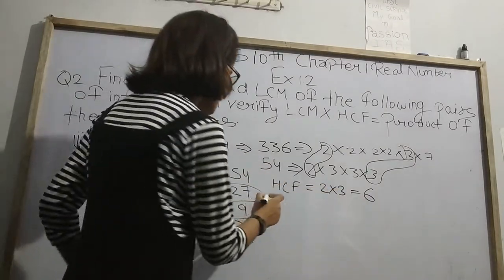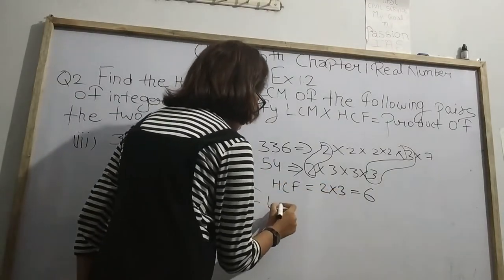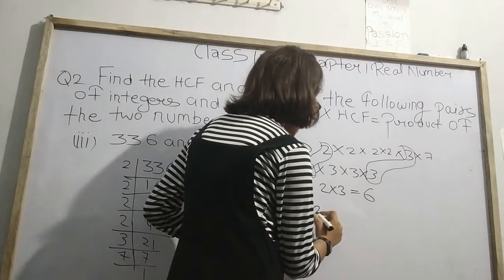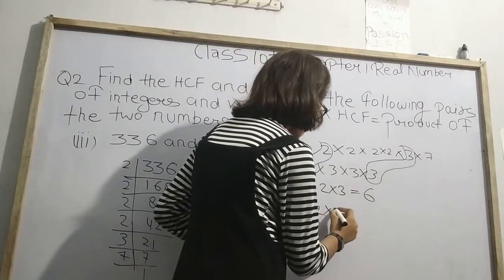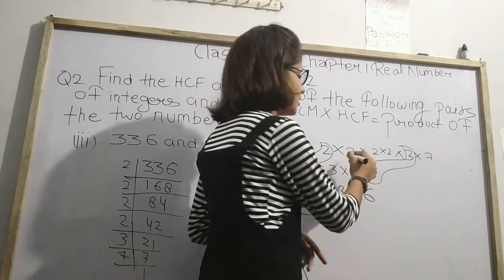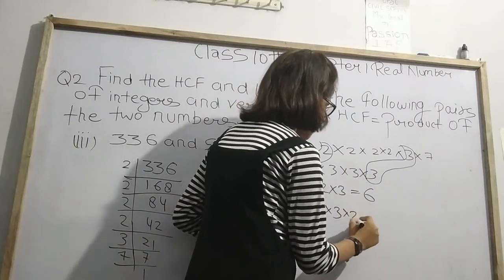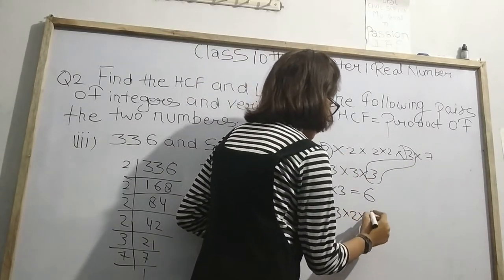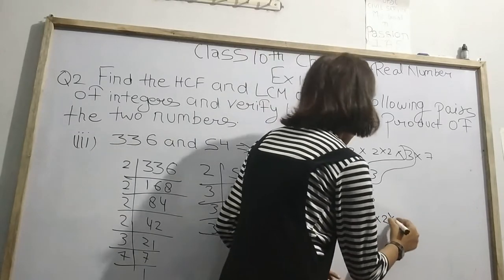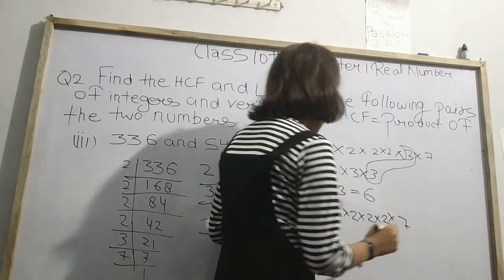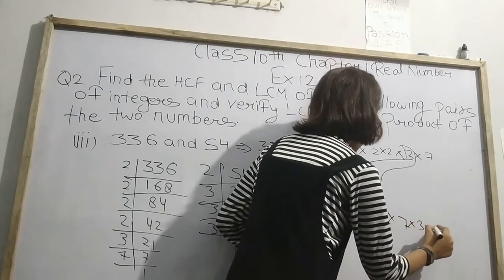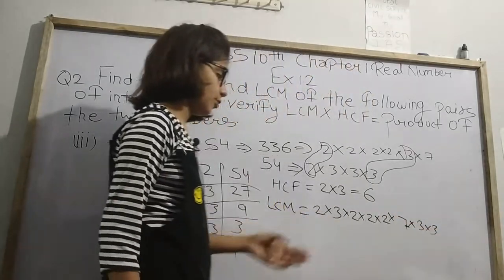Now how to find the LCM? We take the common numbers first: 2 × 3. Then the remaining factors from 336 are 2 × 2 × 2 × 7, and the remaining from 54 are 3 × 3. So LCM = 2 × 3 × 2 × 2 × 2 × 7 × 3 × 3. Let's find the product.